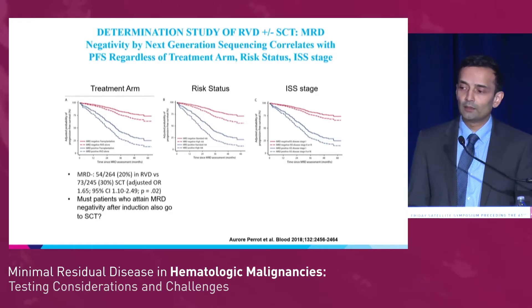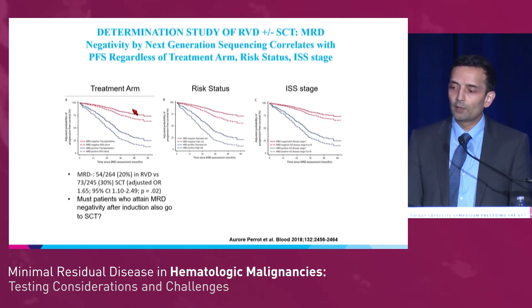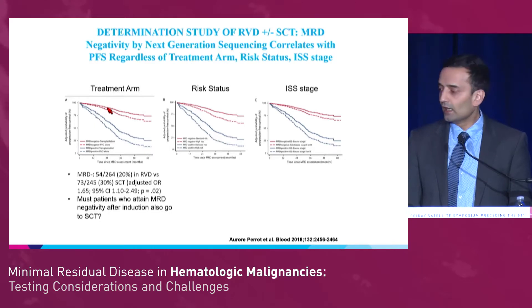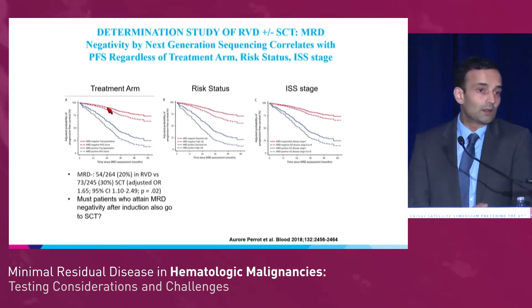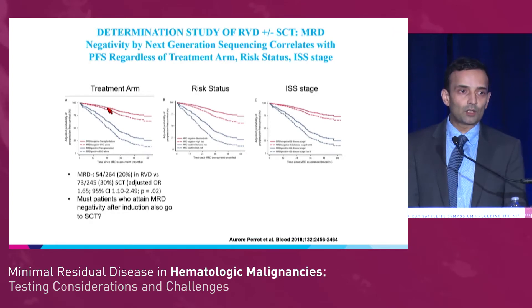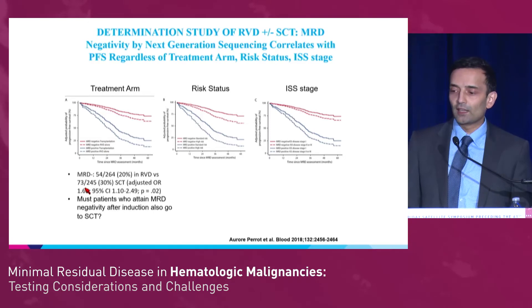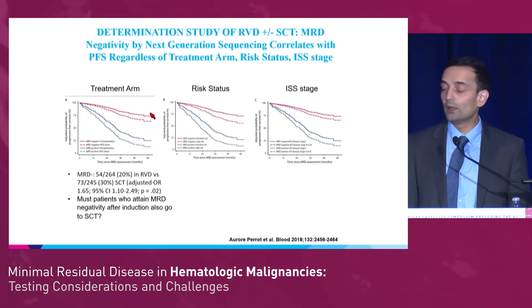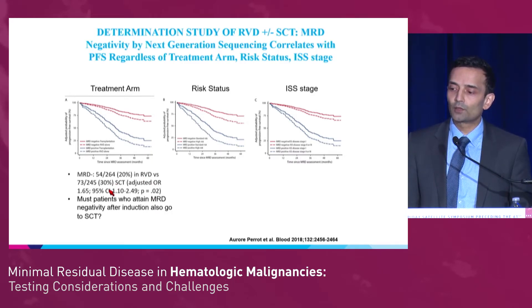The DETERMINATION study is bortezomib, lenalidomide, and dexamethasone with or without transplant. You can see MRD status divided by treatment arm, risk status, and ISS stage. One of the questions being asked is: if you have all of these novel agents, why do I need to do a transplant? This study suggests that if you attain MRD negativity, it didn't matter which treatment arm you were in — that was more important than the actual arm. So MRD negativity, if you didn't get transplanted, might be just as good. The problem, of course, is that more patients attain MRD negativity with transplant.